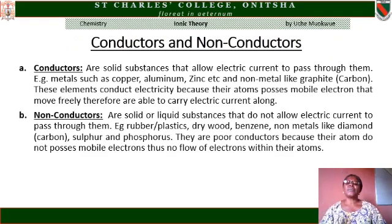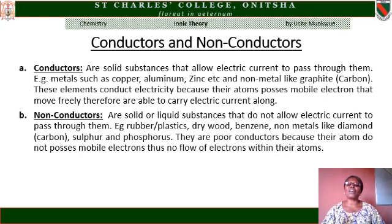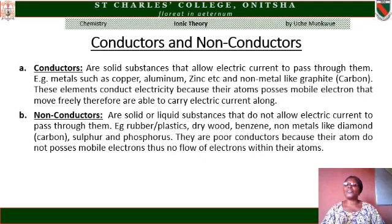Another thing I would like us to look at is conductors and non-conductors. Conductors are solid substances that allow electric current to pass through them. Examples of conductors include metals like copper, aluminium, and zinc, and non-metals like graphite — an allotrope of carbon. These elements conduct electricity because their atoms possess mobile electrons able to carry electric currents along. Non-conductors are solid or liquid substances that do not allow electric current to pass through them. Examples are rubber, plastics, dry wood, benzene, non-metals like diamond, sulfur, and phosphorus. They are poor conductors because their atoms do not possess mobile electrons, so there is no flow of electrons within their atoms.